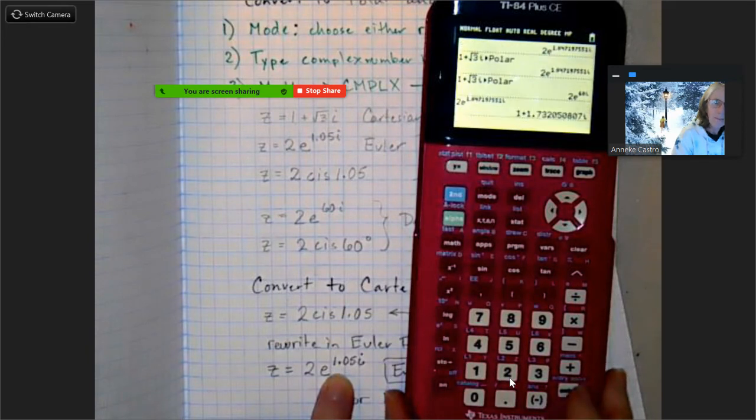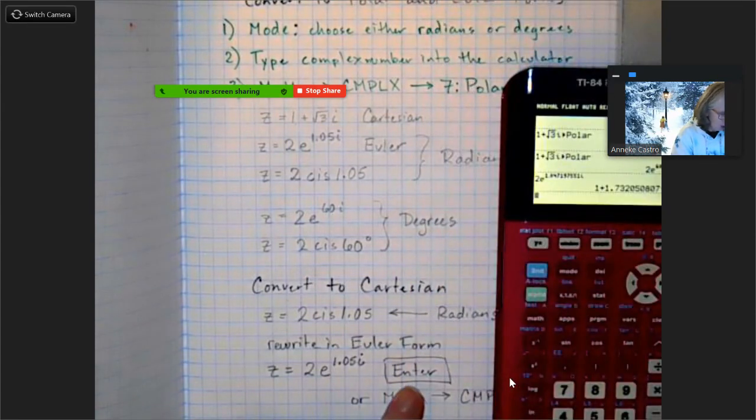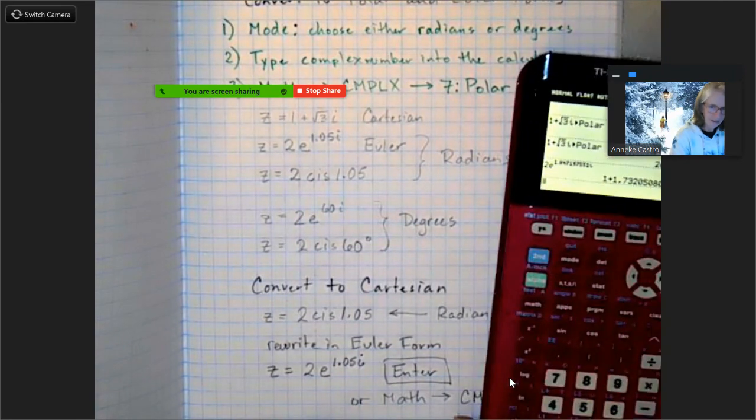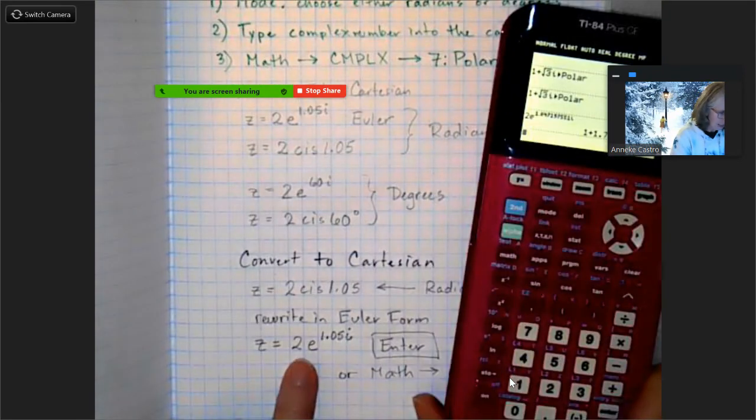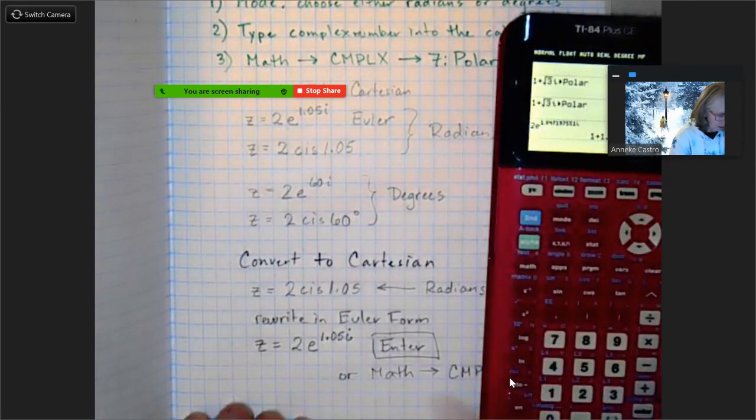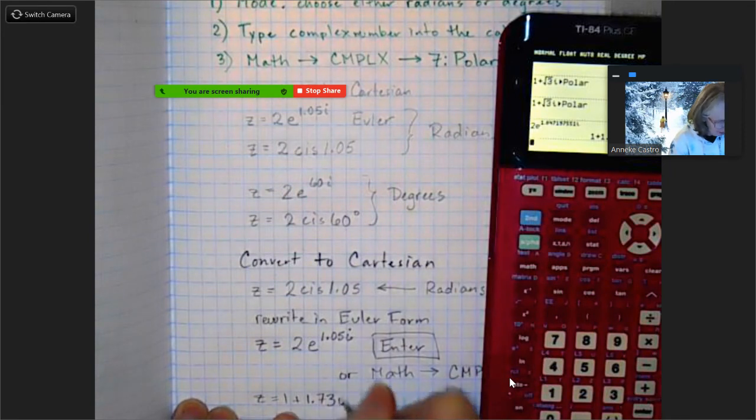And look what happens. Bam, right away it gives it to you in Cartesian rectangular form. So there it is. So I didn't even have to go to Math, complex, and then ask for it in rectangular form. It gave it to me just by typing it in Euler form and hitting enter. It gave it to me in Cartesian form. So z equals 1 plus 1.73i if I'm rounding off to three significant figures.